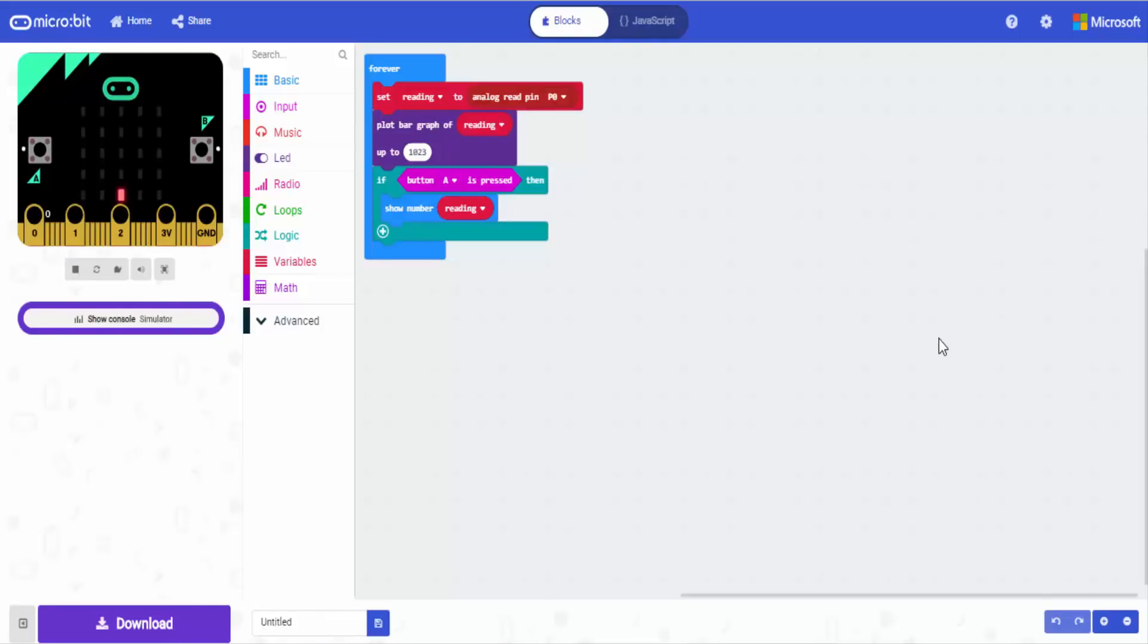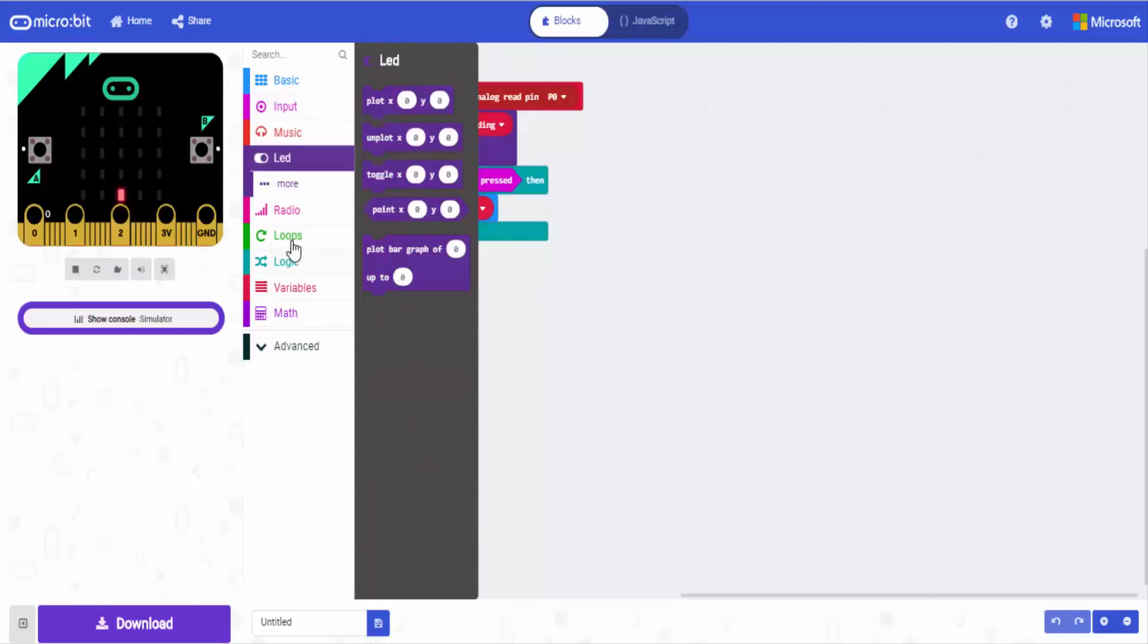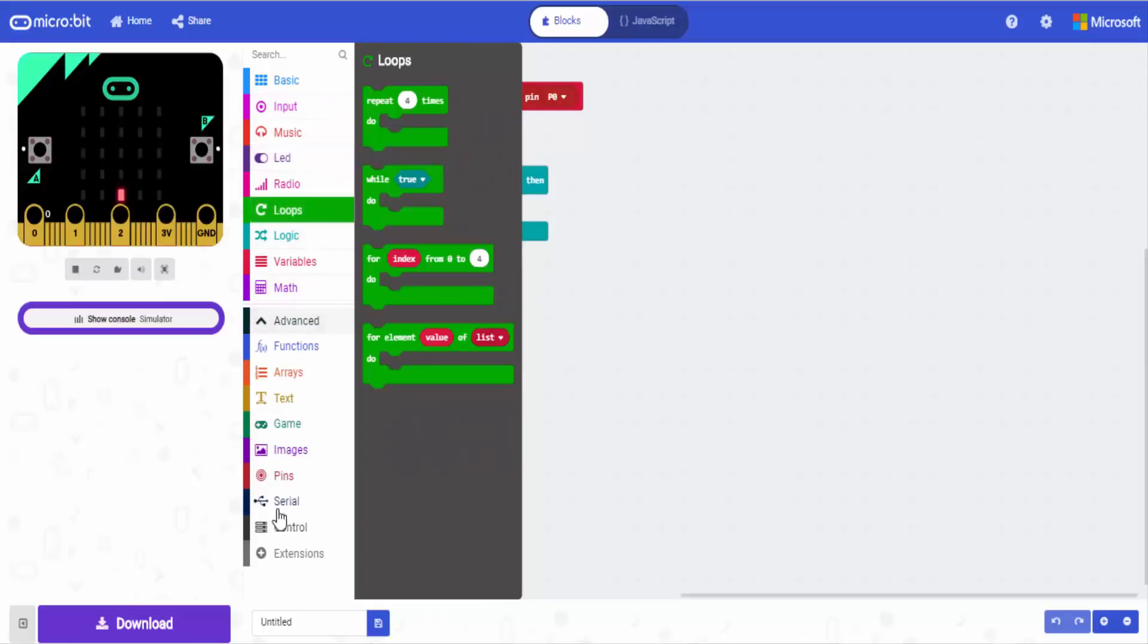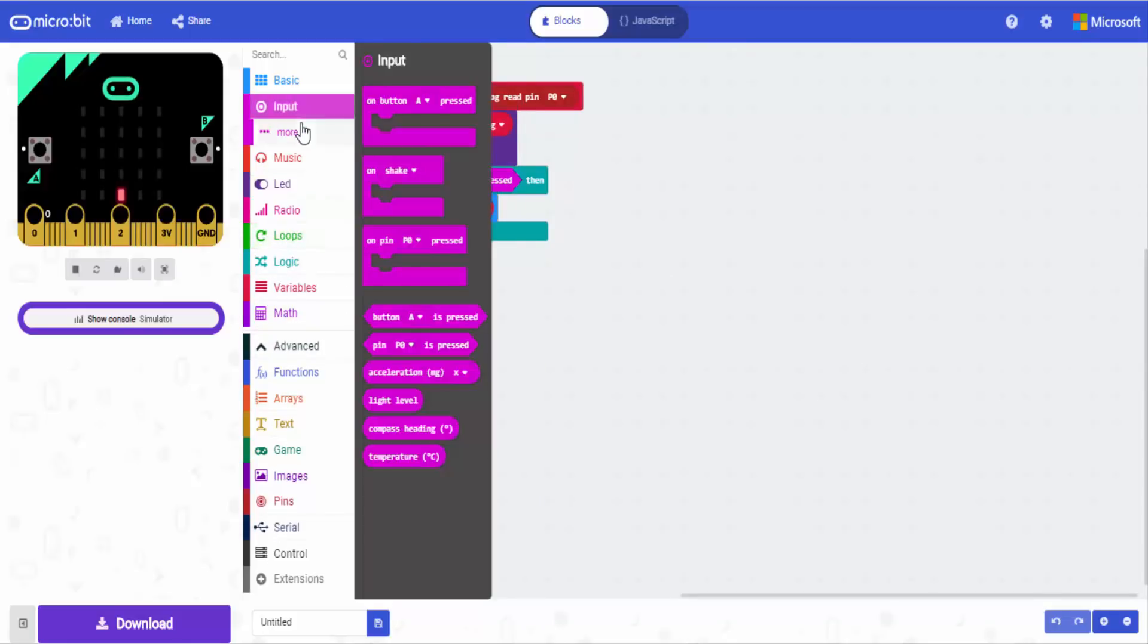You will also need to create if statements that when you press the button it shows the reading. It's very easy to use this block program. Everything you need is in there. It's pretty much just drag and drop.